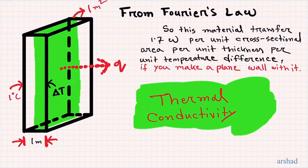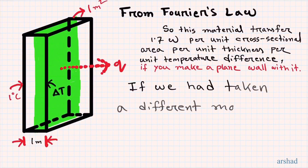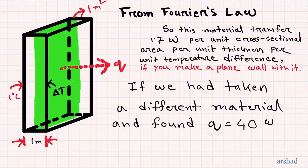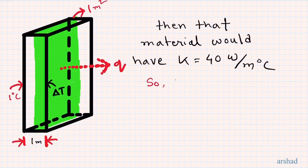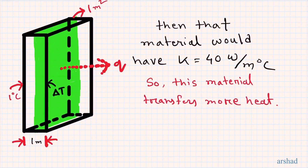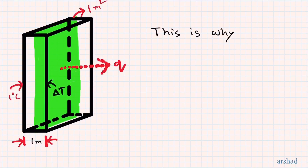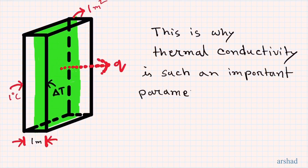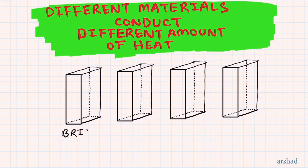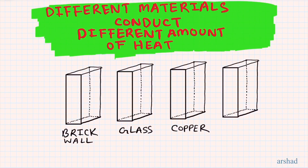If we take a different material and again measure heat transfer through a plane wall with the same unit parameters, and find the amount of heat transferred is 40 watts, then that material has a thermal conductivity K of 40 watts per meter degree Celsius. This is why thermal conductivity is important — it gives an estimate of how much heat a material conducts.